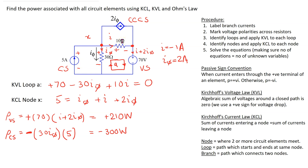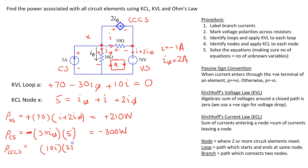Next let's look at the dependent source. The power associated with it is the product of the voltage and the current. We use the voltage drop across the 10-ohm resistor, which is connected in parallel with the dependent source, to find the voltage across it with the same polarity. This is the product of the voltage, 10 times I, and the current, 2I_phi. The current is entering the terminal marked plus, so we write the power calculation with a plus sign. Substituting the values gives minus 40 watts.